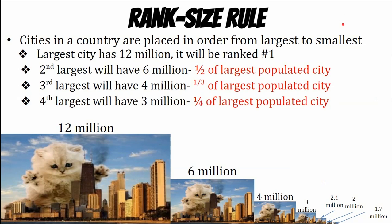Sometimes we use the rank-size rule, which is a way to predict the size of a city in a country. If the largest city is 12 million people and we want to know how big the fourth largest city is, we use one over N. So if N is four, that's one-fourth of 12, which equals three million. The second largest city would be six million. The third would be one-third of 12 — four million. So whatever rank it is, you divide the largest city's population by that rank number. They usually like to use 12 on the test because it divides by three and four pretty easily.